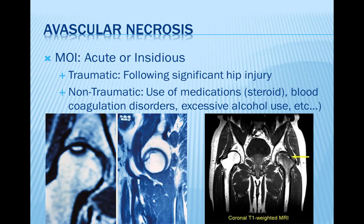Avascular necrosis of the femoral head is a pathological process resulting from an interruption of blood supply to the bone. It is poorly understood but represents the final common pathway of traumatic or non-traumatic factors that compromise the precarious circulation of the femoral head. Femoral head ischemia results in death of marrow and osteocytes, usually resulting in collapse of the necrotic segment. Traumatic avascular necrosis typically follows a significant hip injury such as a dislocation. Non-traumatic avascular necrosis most frequently occurs after use of specific medications such as steroids, blood coagulation disorders, or excessive alcohol use.